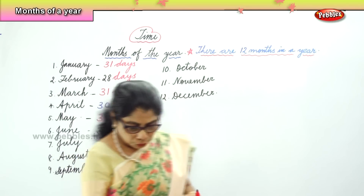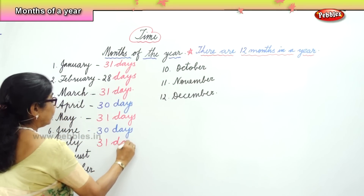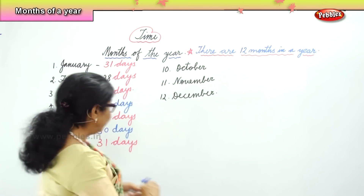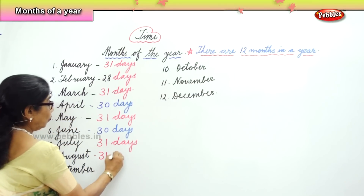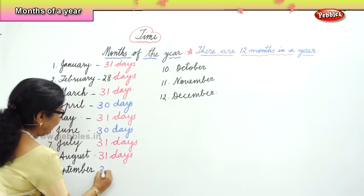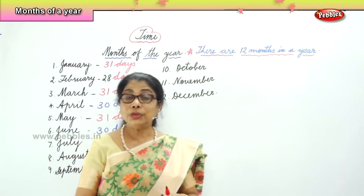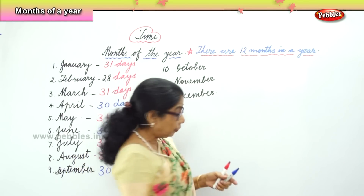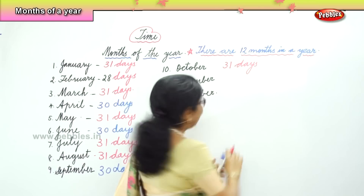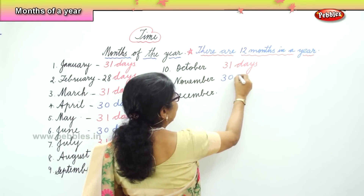July — the month of July has thirty-one days. And then August has again thirty-one days. Thirty-one days in August. September — the ninth month has thirty days. Thirty days in September.